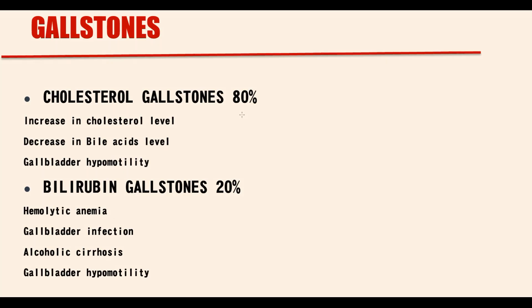We have two types of gallstones. Gallstones can be made from cholesterol molecules or from bilirubin molecules. The most common type of gallstones are cholesterol gallstones, which constitute approximately 80% of all gallstones.